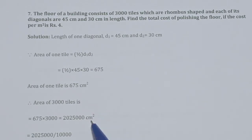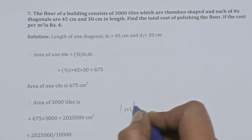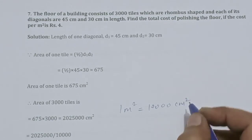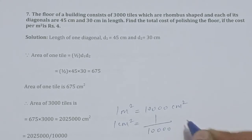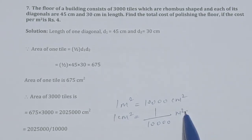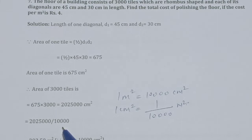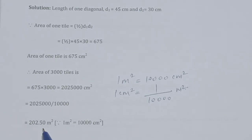Now we will convert cm² to m². Since 1 m² = 10,000 cm², we have 1 cm² = 1/10,000 m². So we divide 20,25,000 by 10,000, which gives us 202.50 m².